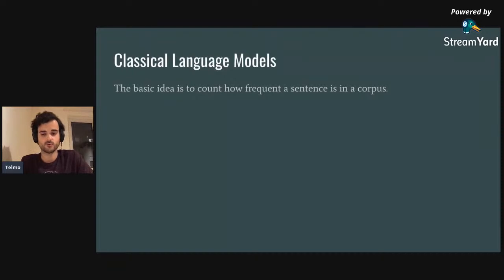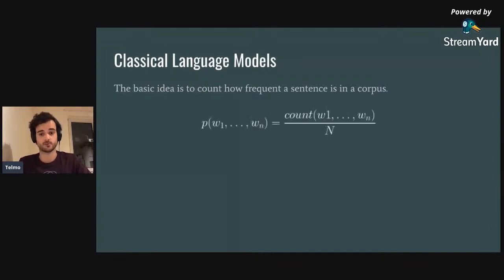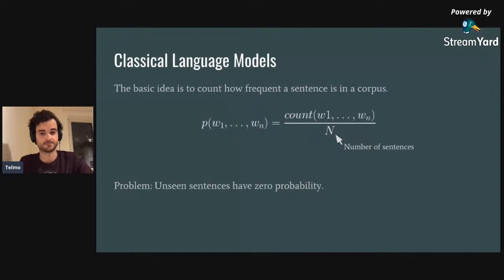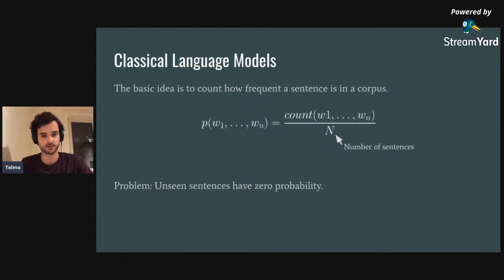Now let's dive into classical language modeling. The simplest idea is to download a corpus like all of Wikipedia, look at all the sentences, and say the probability of a sentence is how frequently it appears in that corpus. However, the space of possible sentences is huge, so no matter how big your corpus is, there will be many sentences you've never seen at training time — their count is zero, so their probability is zero. Clearly this isn't a good model.